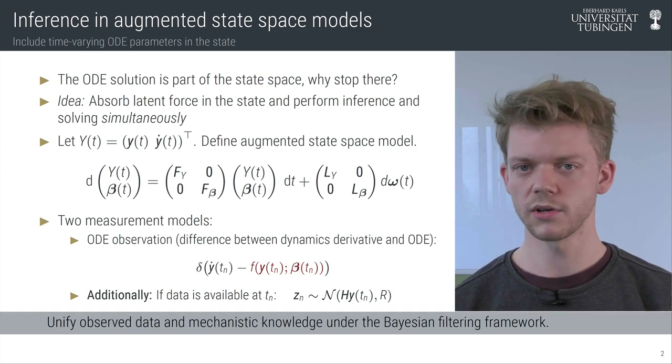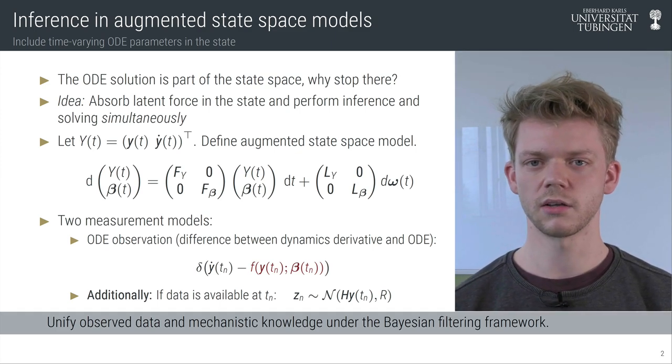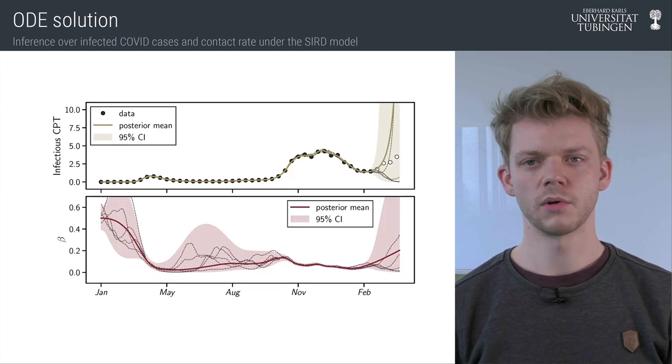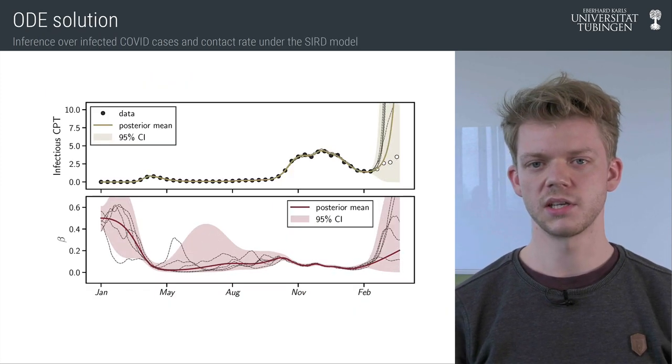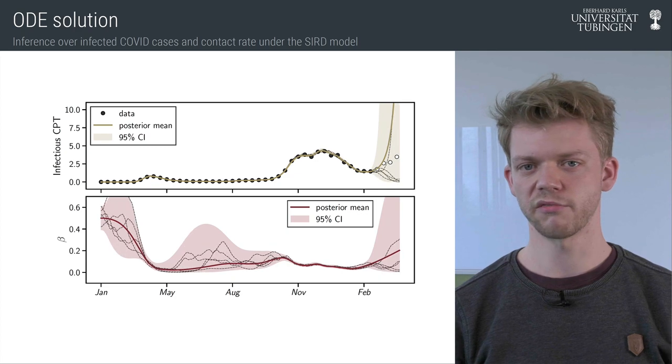So now let's have a look at what the results would look like on COVID-19 data. What you see here is the smoothing posterior as obtained from the aforementioned framework.